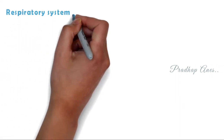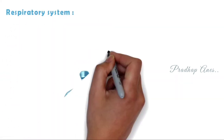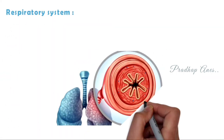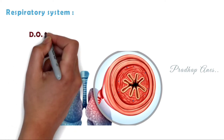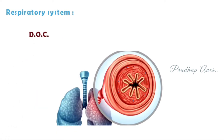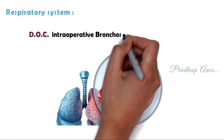Respiratory system: Inhaled volatile anesthetics such as halothane, isoflurane, sevoflurane, and desflurane are known to be potent bronchodilators. Sevoflurane is also the agent of choice for intraoperative bronchospasm.